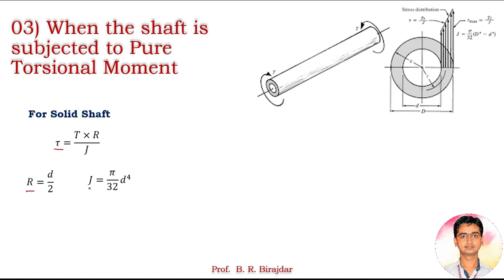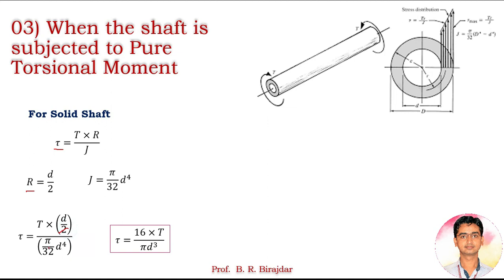Note that the moment of inertia I = π/64 · d⁴ while polar moment of inertia J = π/32 · d⁴. Substituting r = d/2 and J = π/32 · d⁴ into τ = T·r/J and simplifying gives shear stress τ = 16T / (π·d³) for the solid shaft under pure torsion.